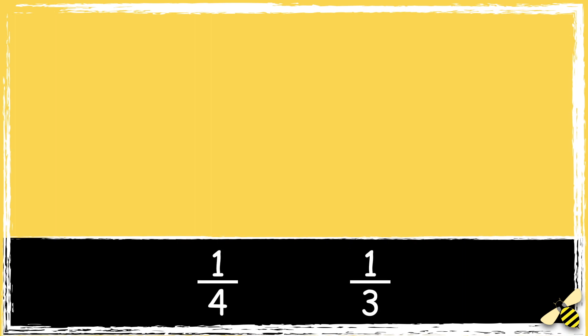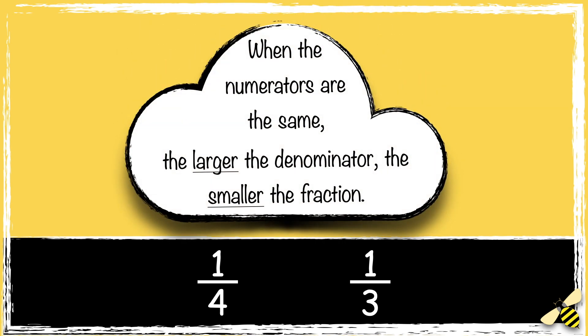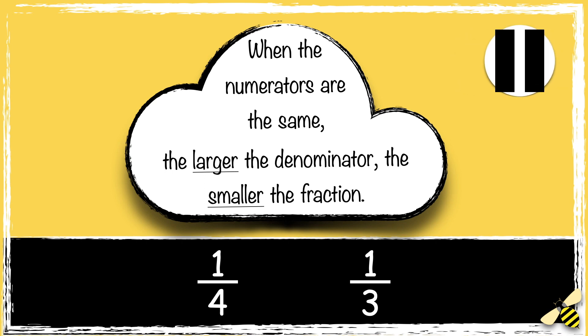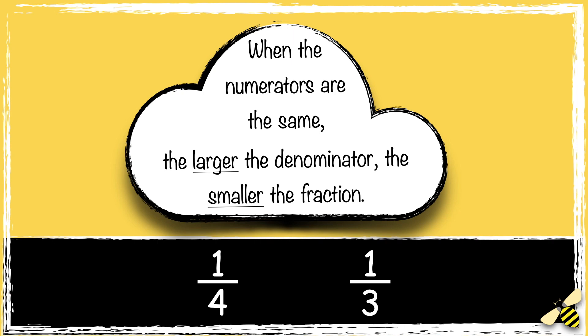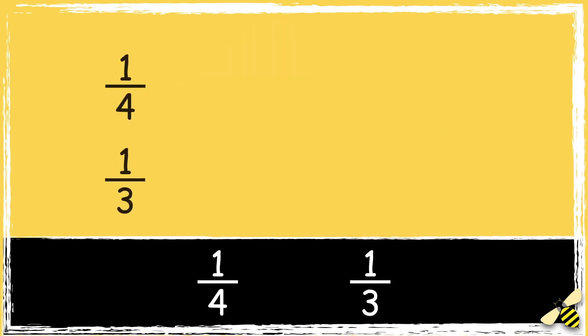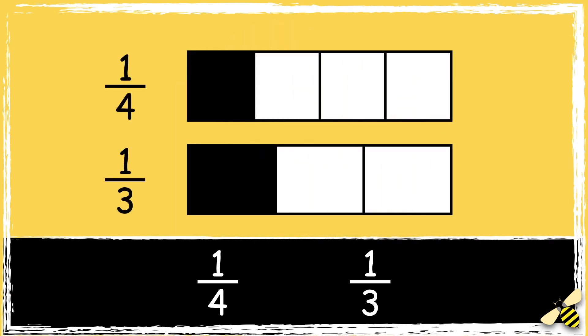Let's have a go at doing it without the fraction rule now. Which fraction is greater: 1 quarter or 1 third? Remember, when the numerators are the same, the larger the denominator the smaller the fraction. Pause the video to give yourself time to work out the answer. Let's have a look at these fractions side by side — we can see that 1 quarter is less than 1 third.